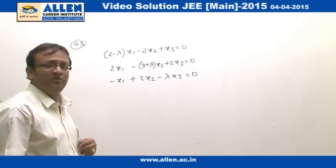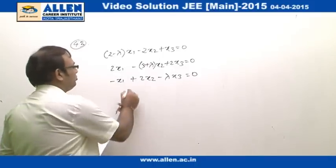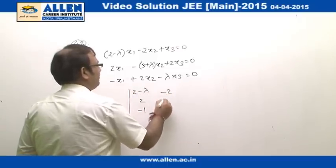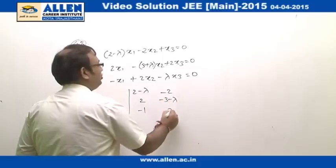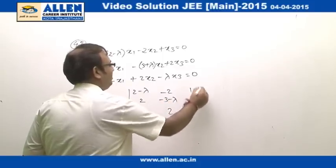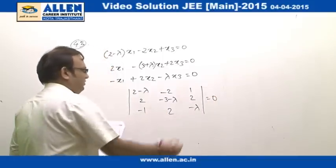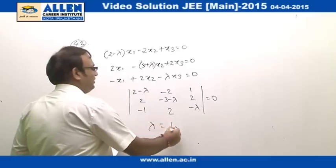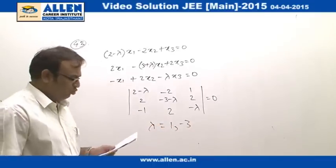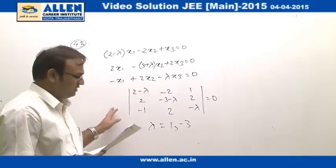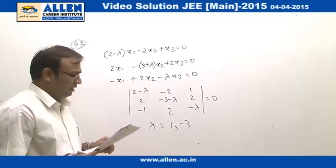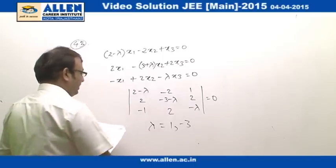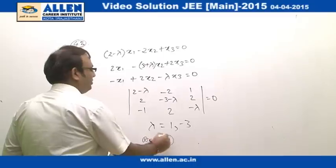For a non-trivial solution, the determinant Δ must equal zero. Setting up the 3×3 determinant with entries (2−λ, −2, 1), (2, −3−λ, 2), (−1, 2, −λ) equal to zero and solving, we get λ=1 and λ=−3. So there are two possible values of λ, and option number 1 is the correct answer.